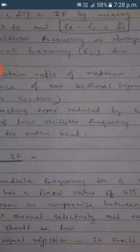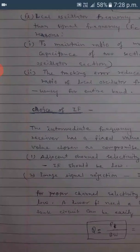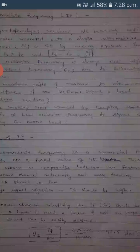There are important parameters involved in selecting the intermediate frequency. The intermediate frequency is chosen as 455 kilohertz for AM receivers and 10.7 megahertz for FM receivers. This choice is a compromise between two factors: first, adjacent channel selectivity, for which the IF should be low; and second, image signal rejection, for which the IF should be high.